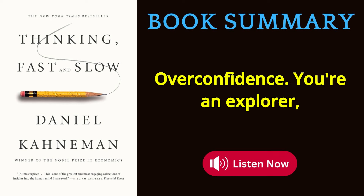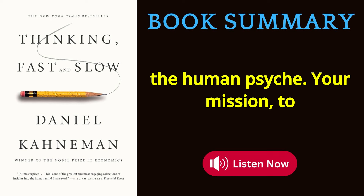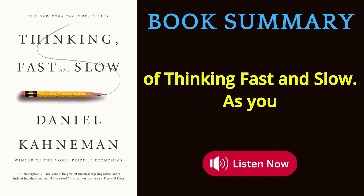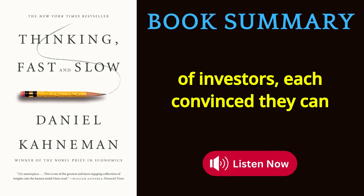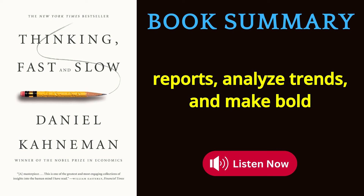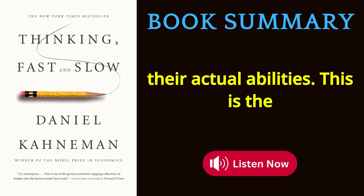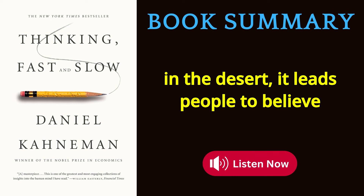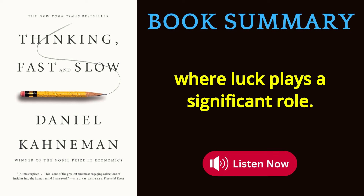Part 3: Overconfidence. Consider a group of investors, each convinced they can beat the market. They pore over financial reports, analyze trends, and make bold predictions. Yet, as Kahneman reveals, their confidence far exceeds their actual abilities. This is the illusion of skill — like a mirage in the desert, it leads people to believe they have more control over outcomes than they actually do, especially in areas where luck plays a significant role.